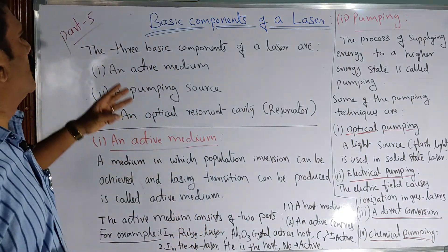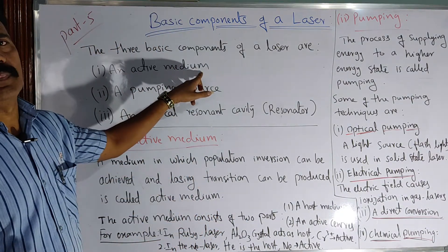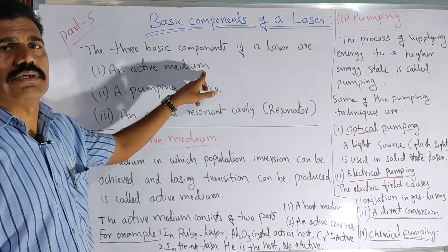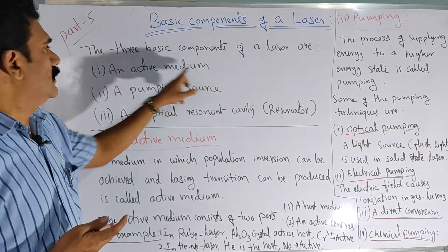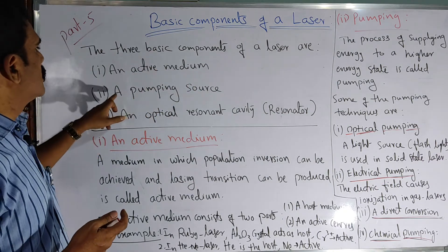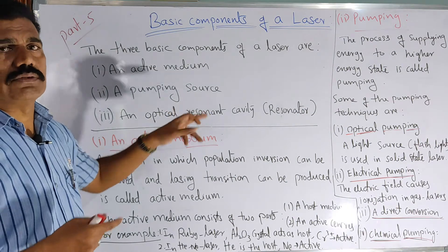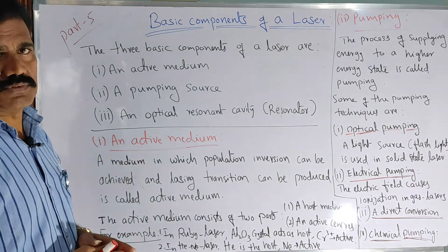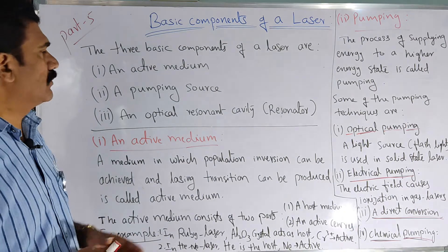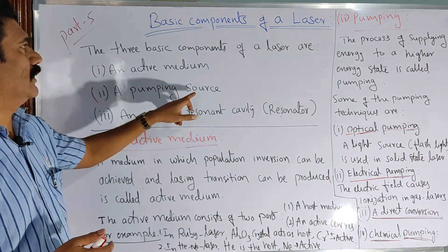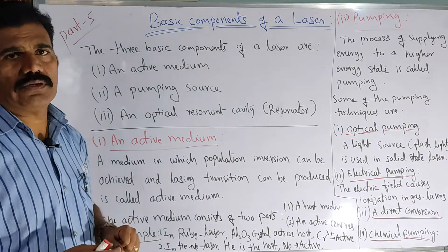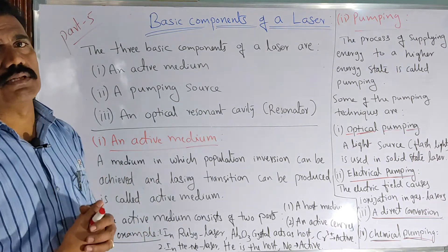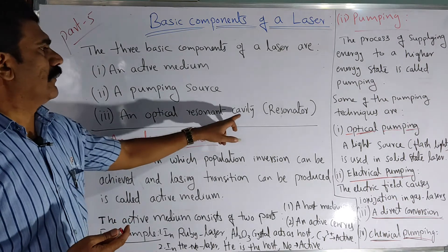Three main components will come across. First, we can mention an active medium — in any laser device, one should have an active medium which supports population inversion and stimulated emission to produce a laser. Then we need a pumping source to excite the atoms from ground state to excited state. And third, an optical resonant cavity, for amplification of the laser light and to achieve coherency in the laser beam. It is also called a resonator.